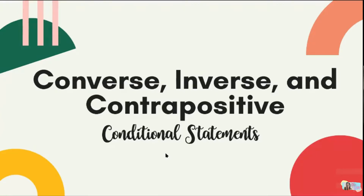Yesterday, we also discussed the Venn diagram and how to form the if-then form if a statement is not yet in that form. To transform a conditional statement into its if-then form, first identify the hypothesis and conclusion, construct a proper sentence, then add the words 'if' and 'then' to complete the if-then form. For the Venn diagram, remember that the inner oval contains the hypothesis and the outer oval contains the conclusion.